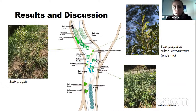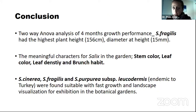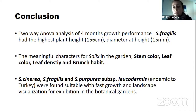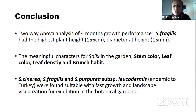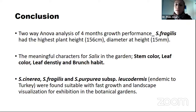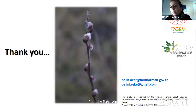As a result, we constructed the willow garden. The species showing good growth and visualization were Salix fragilis, Salix caprea subspecies leucodermis, and Salix scenerio. These were planted according to their coverage area. As a conclusion, according to four-month two-way ANOVA analysis, Salix fragilis had the highest plant height and diameter. The meaningful characters for a Salix garden were stem, leaf color, leaf density and branch habit. Three species — Salix scenerio, Salix fragilis, and Salix caprea subspecies leucodermis (endemic to Turkey) — were found suitable for fast-growing landscape visualization for exhibition in botanical gardens. Thank you for listening.